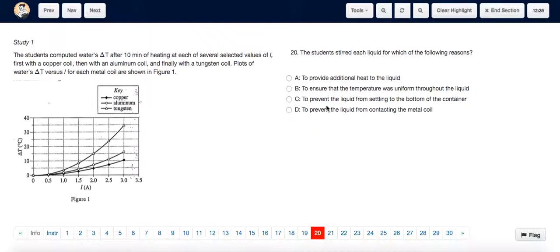For question 20, you don't really have to rely on the passage. You just have to use logic to figure out which of the options could be the most plausible reason that the liquid was stirred. So which of these is the most obvious consequence of the liquid being stirred? We can see that option A says to provide additional heat to the liquid.